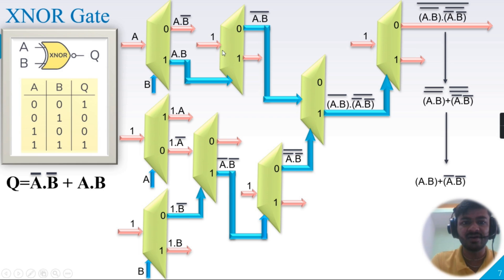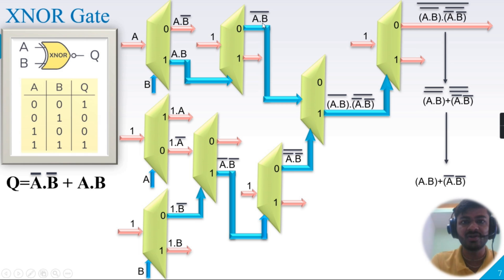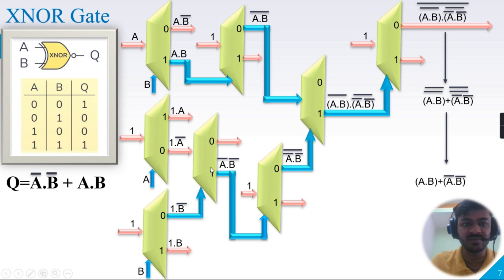The fifth demux uses Q1 output (A AND B) of the third demux as the select line, with 1 as input. We only need Q0 output here: Q0 equals 1 AND (A AND B)-bar, which by identity law is (A AND B)-bar.